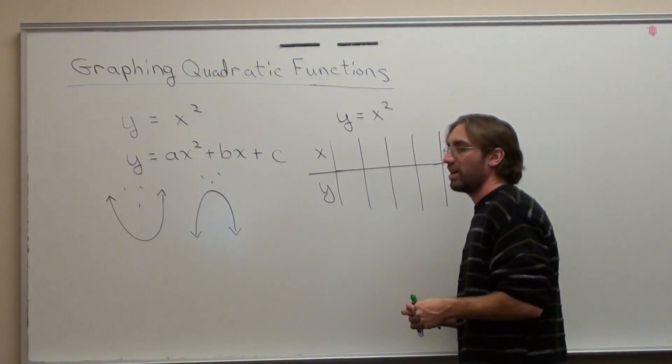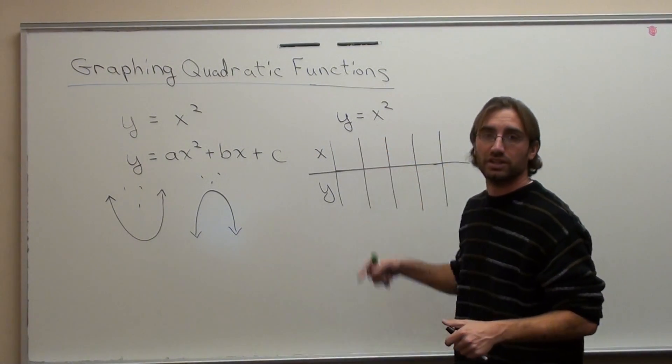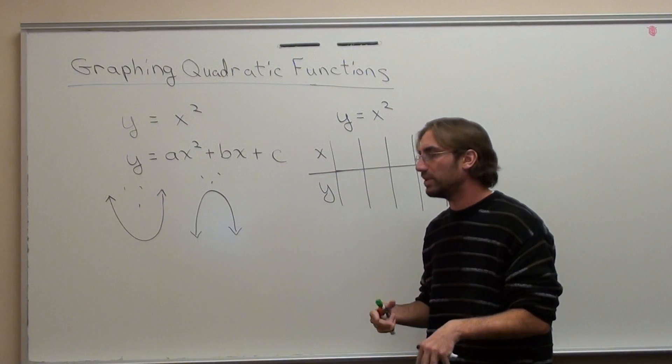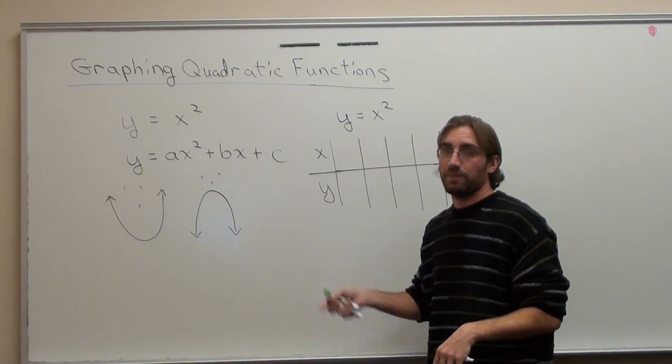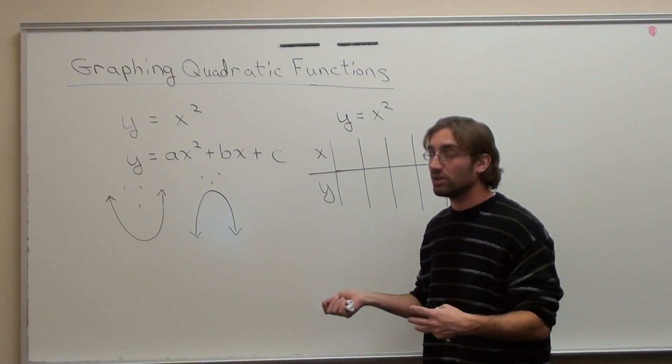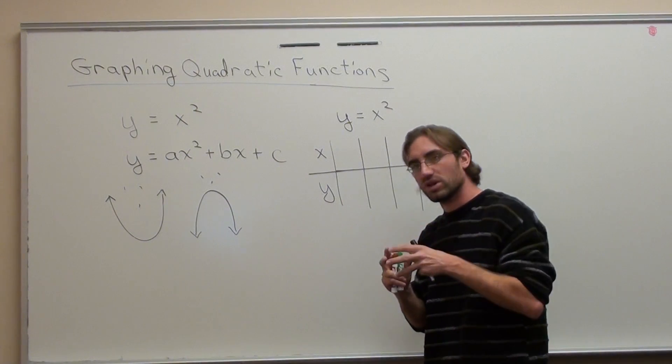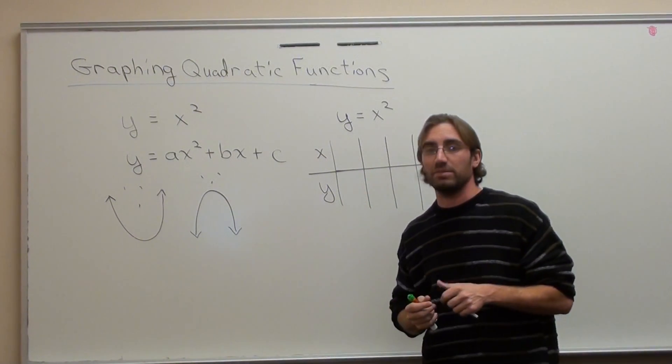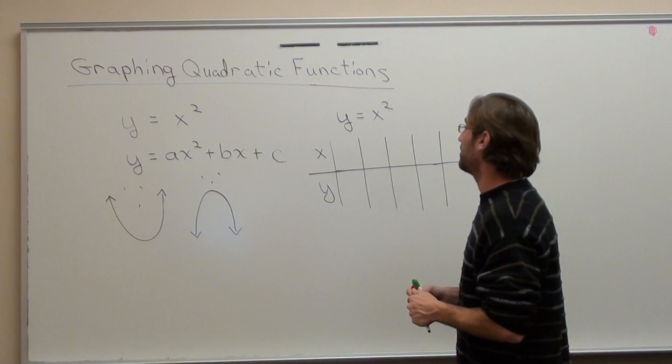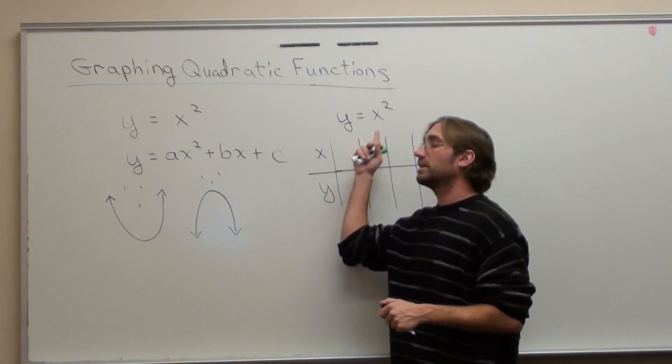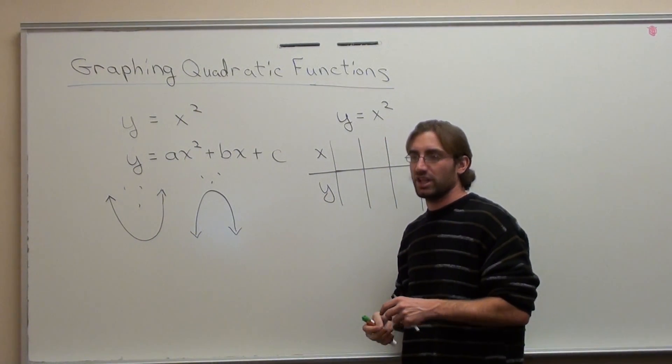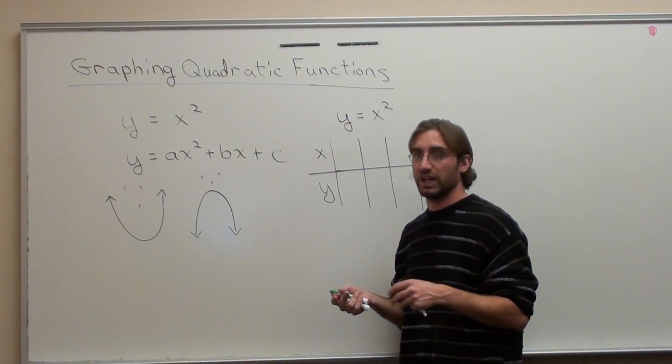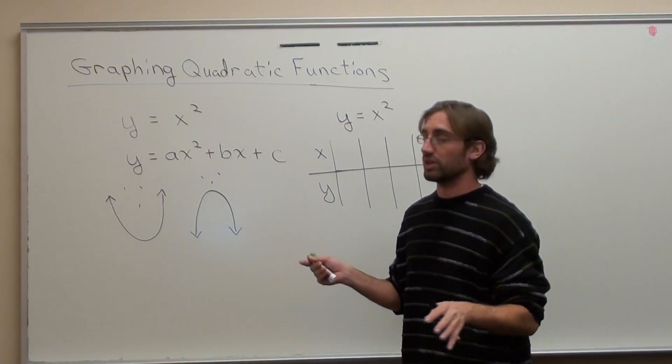Now, the best way to start by graphing is to start with its parent function, basically where everything starts from, y equals x squared. And I can show you how to do it, but we're going to look at how it works first. Now, we're going to create a table. What's interesting about a table for a quadratic function is that your middle term should be your vertex.